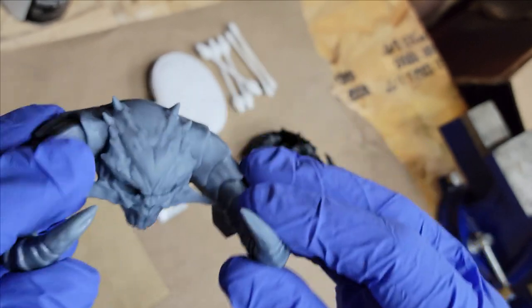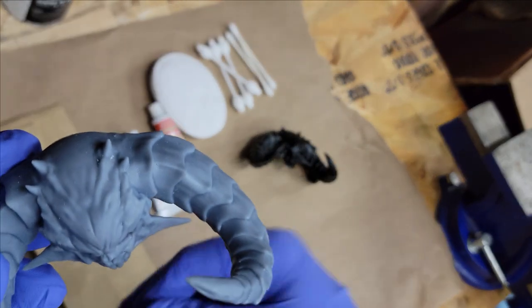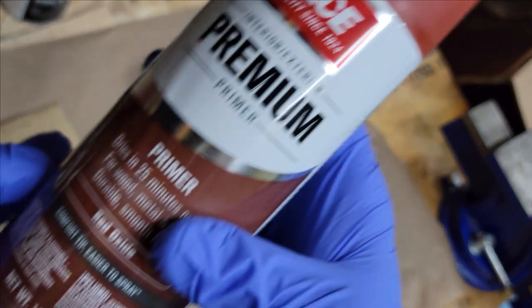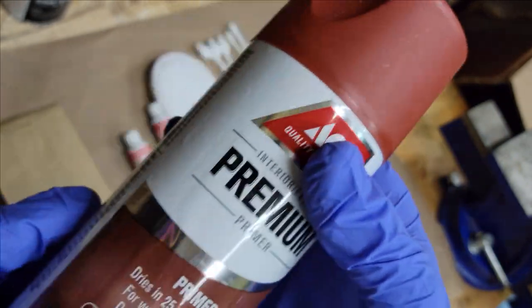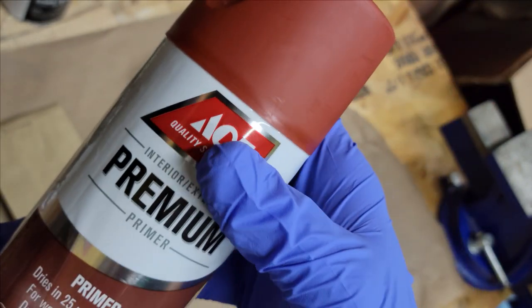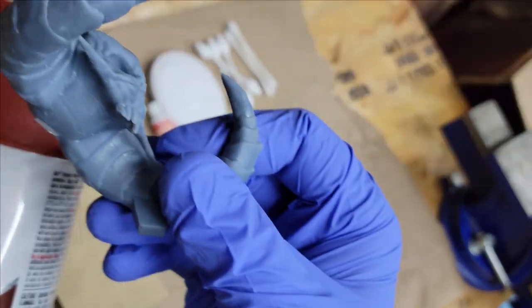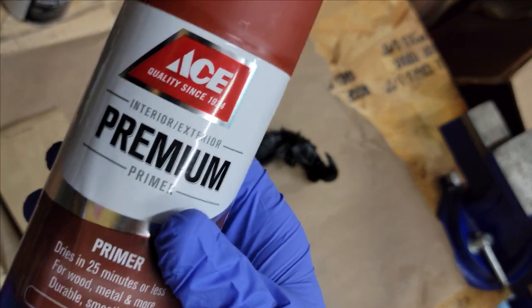It came out gray, but when you apply the rub and buff you need to have it black to give it that antique look and highlight the shadows. I went to the hardware store and picked up this red oxide primer. It was like five bucks for the can. I sprayed one coat on to cover everything, make sure none of the gray was showing through. It takes about 25 minutes to dry - I left it for a while.